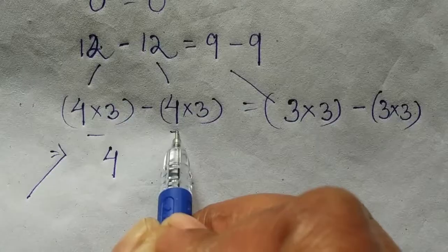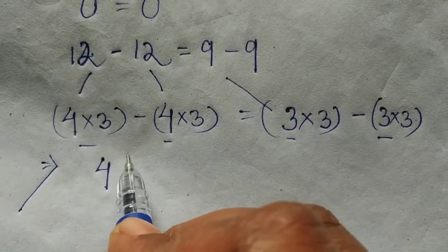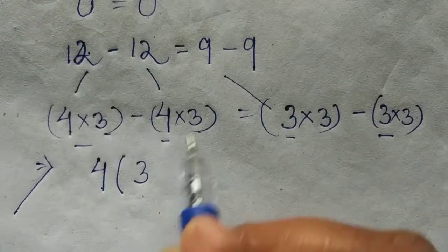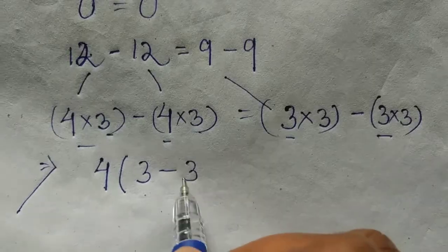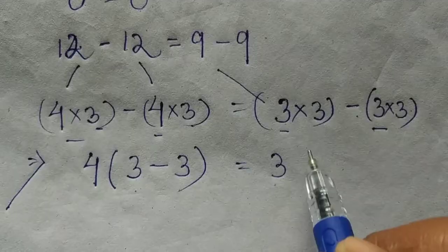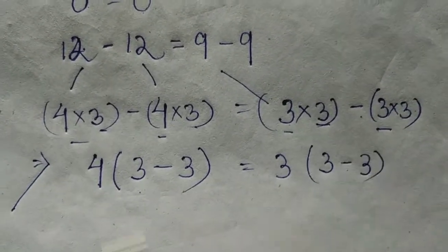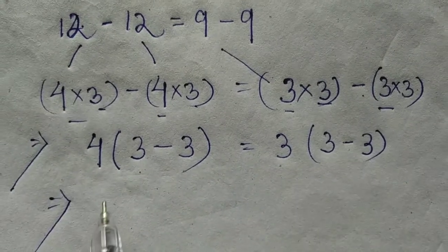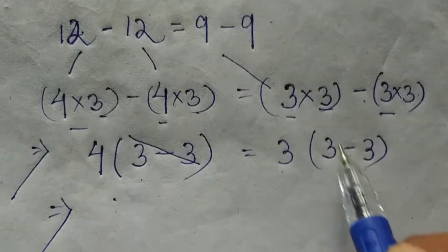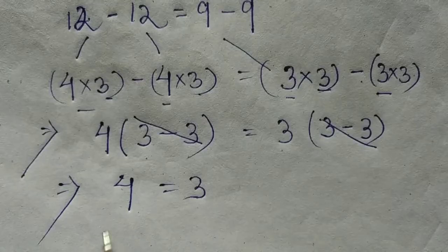Take 4 common, take 3 common — 4 common, all into 3 minus 3. That equals to 3 common, 3 minus 3. That implies both sides 3 minus 3 cancel. That implies 4 is equal to 3.